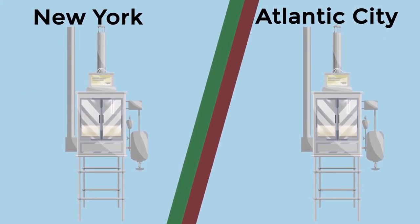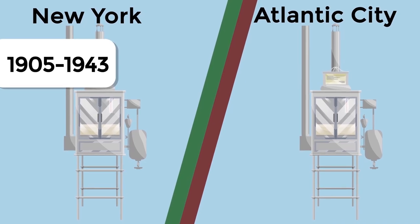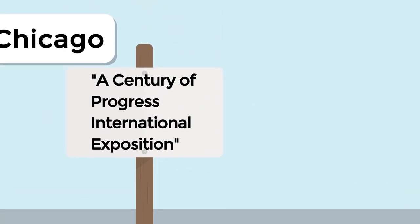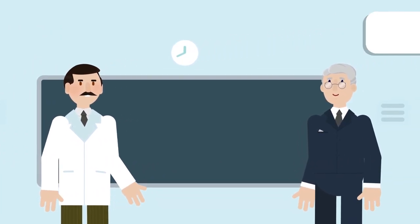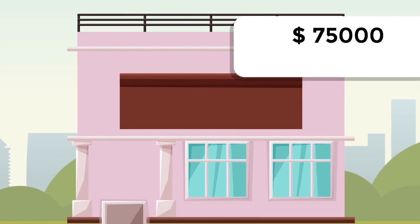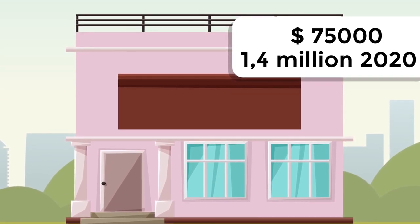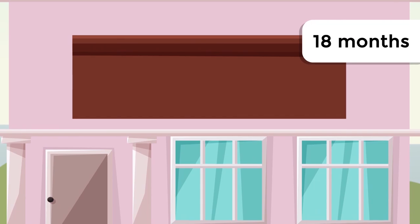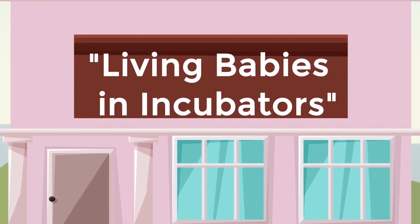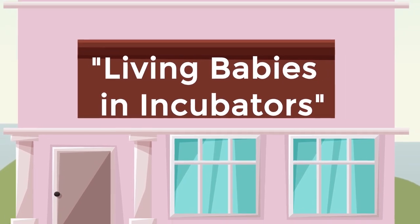Besides the Infantorium, there was a similarly popular exhibition in Atlantic City which ran from 1905 to 1943. Cooney achieved national success in 1933. At the Century of Progress International Exposition in Chicago, Cooney worked in tandem with the recognized doctor Julius Hess. The construction of the facility cost $75,000, or $1.4 million by 2020 standards. The exhibition ran for 18 months.